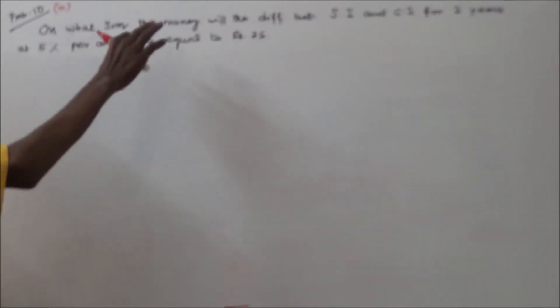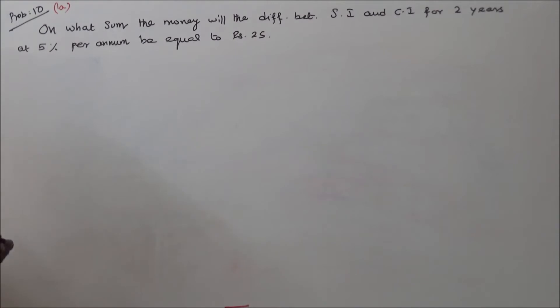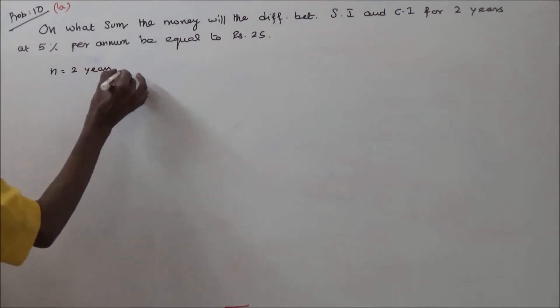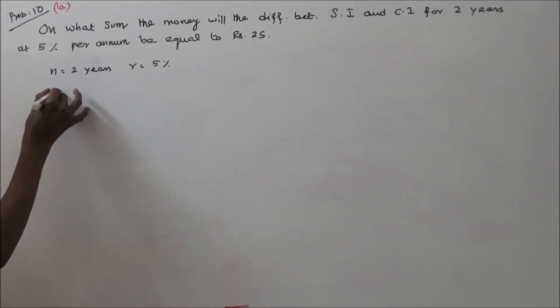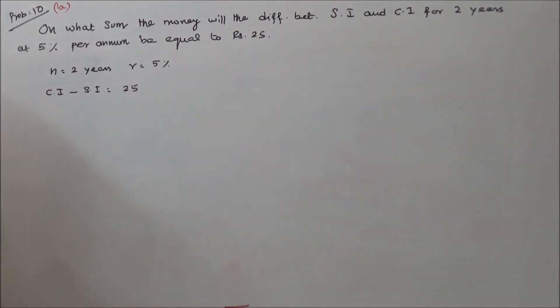Problem 10: For what sum will the difference between simple interest and compound interest for 2 years at 5% per annum be equal to Rs. 25? That is, compound interest minus simple interest equals 25. Given: n = 2 years, r = 5%. The question asks for the value of P, the principal.